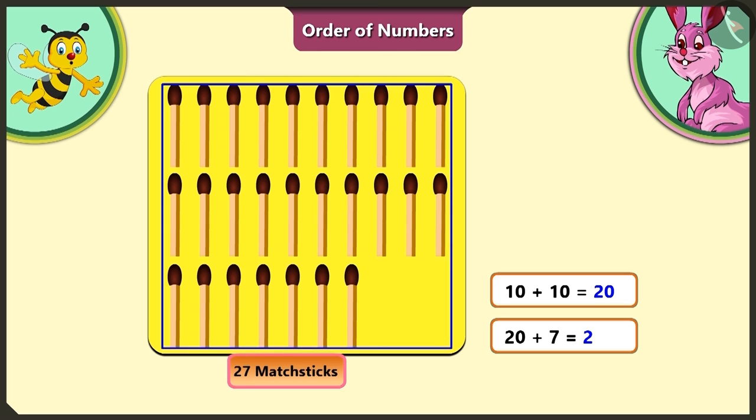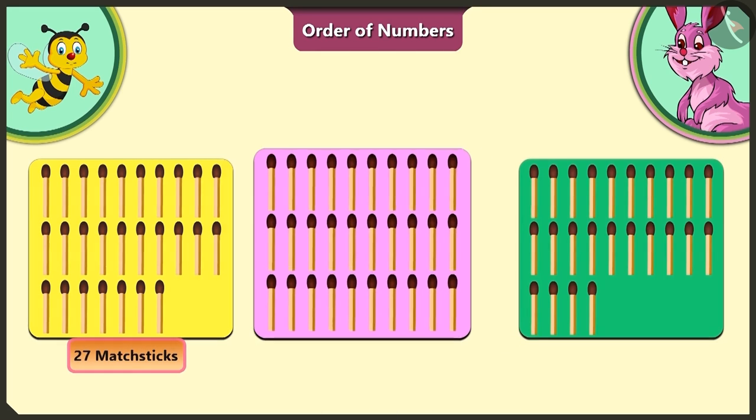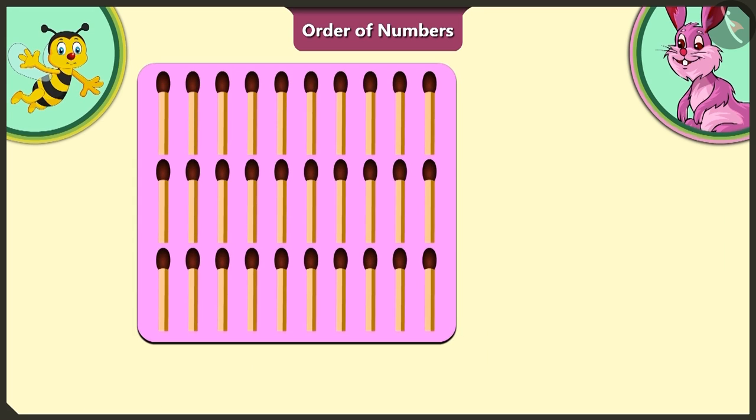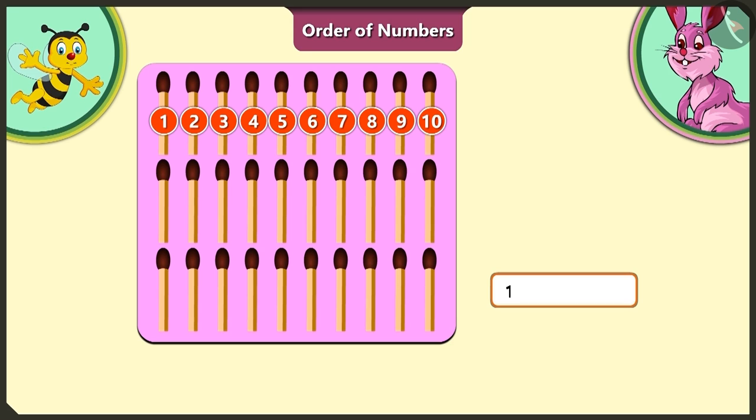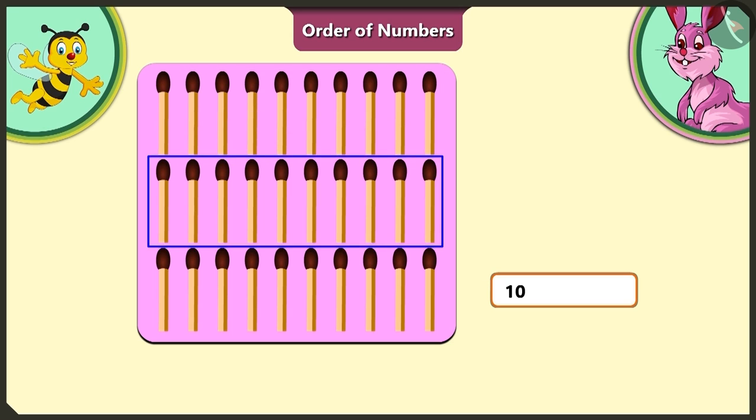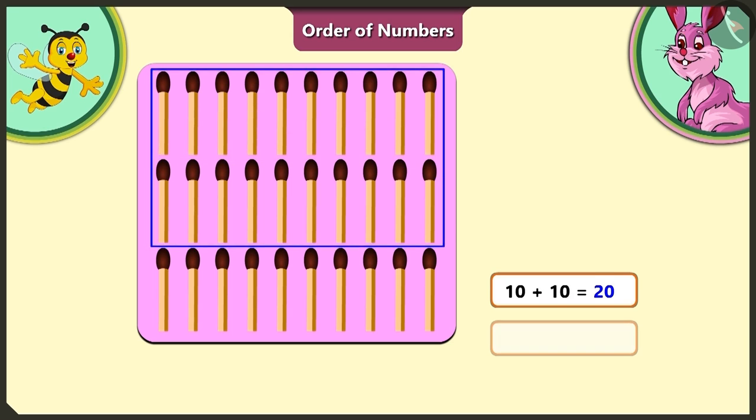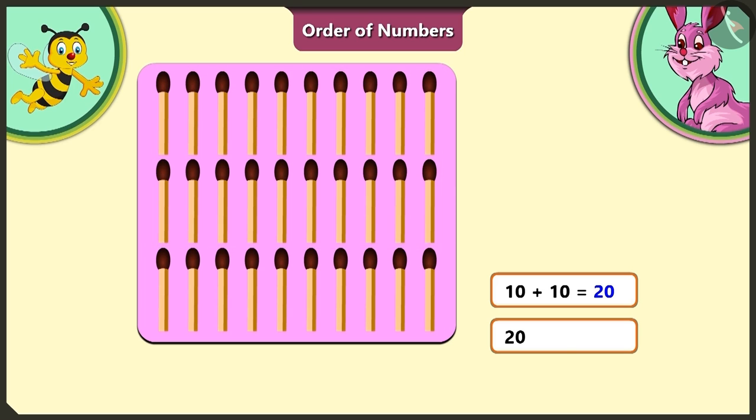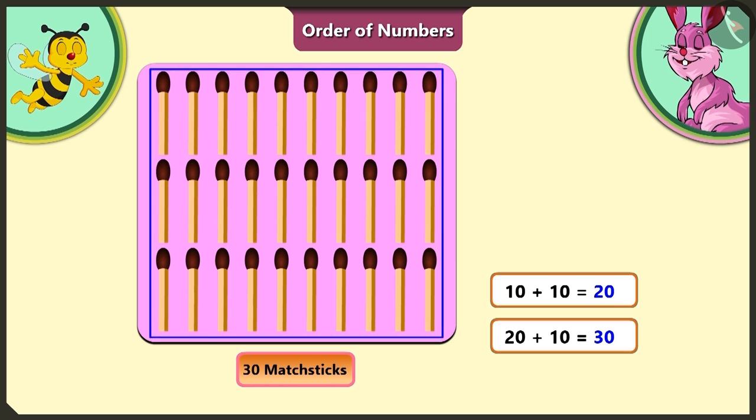And the matchsticks on the pink card? Oh yes, the first group on the pink card has 1, 2, 3, 4, 5, 6, 7, 8, 9, 10 matchsticks. To this first group, if we add the next group, the total number of matchsticks will be 20. To this 20 matchsticks, if we add the next group, we get 30 matchsticks. That means the pink card has 30 matchsticks in all.